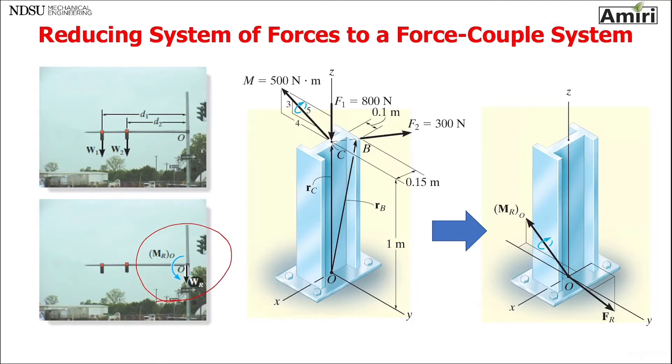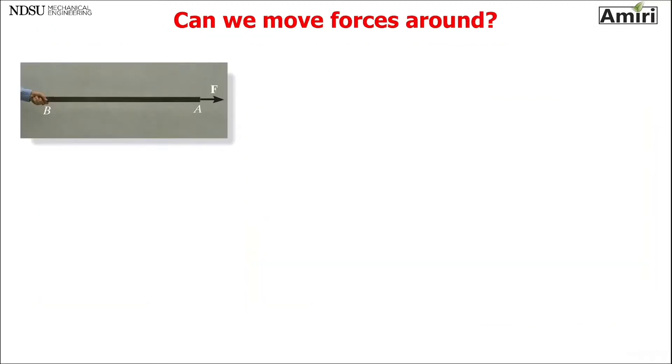Now we're going to learn what happens when you start moving forces around. Can we even move forces around? So here's an example. The goal is move F to point B and see what happens. It's just a beam, someone is pulling on it, someone is holding it at point B, and we want to find can we move F to point B and what happens if we do it.